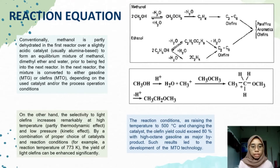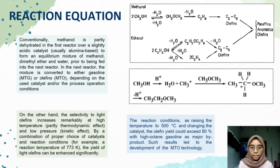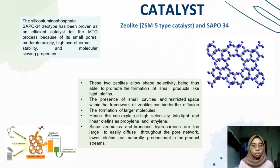The reaction equation shows that methanol is partly dehydrated in the first reactor over a slightly acidic catalyst to form an equilibrium mixture of methanol, dimethyl ether, and water before being fed into the next reactor. In the next reactor, the mixture is converted to olefins depending on the catalyst used and the process conditions. The selectivity to light olefins increases remarkably at high temperature and low pressure. The catalysts used are zeolite and SAPO-34, which allow shape selectivity, thus promoting the formation of small products like olefins.